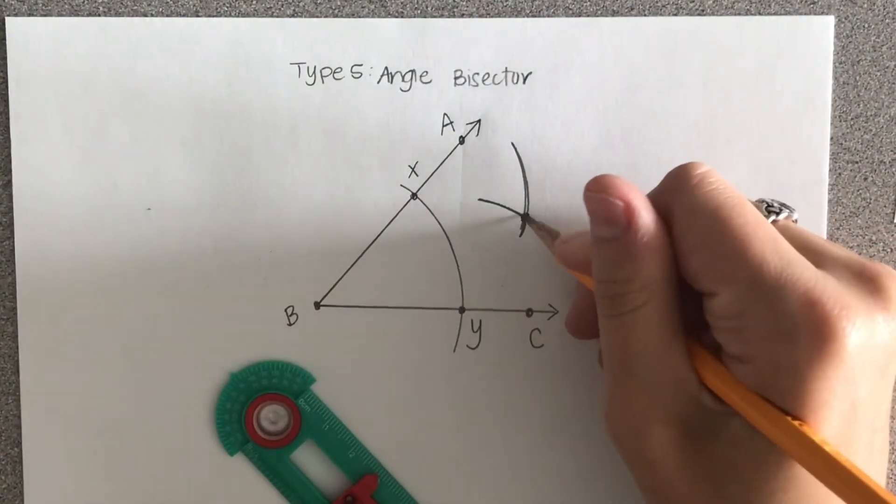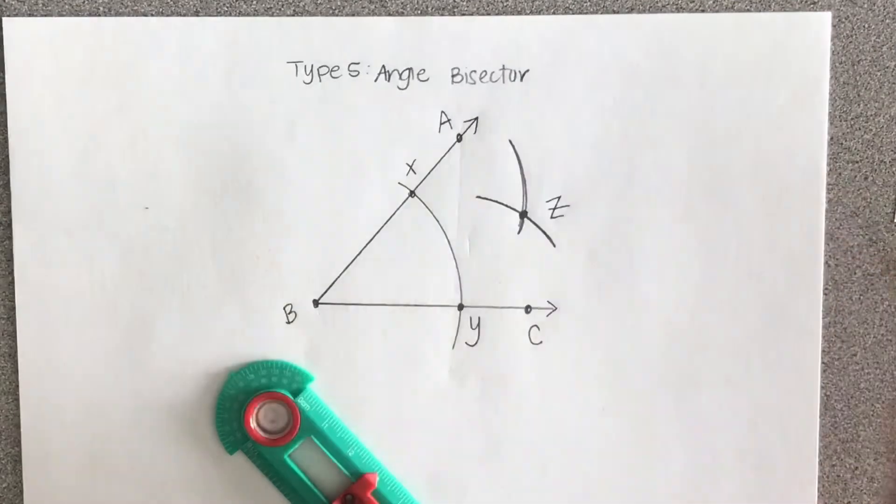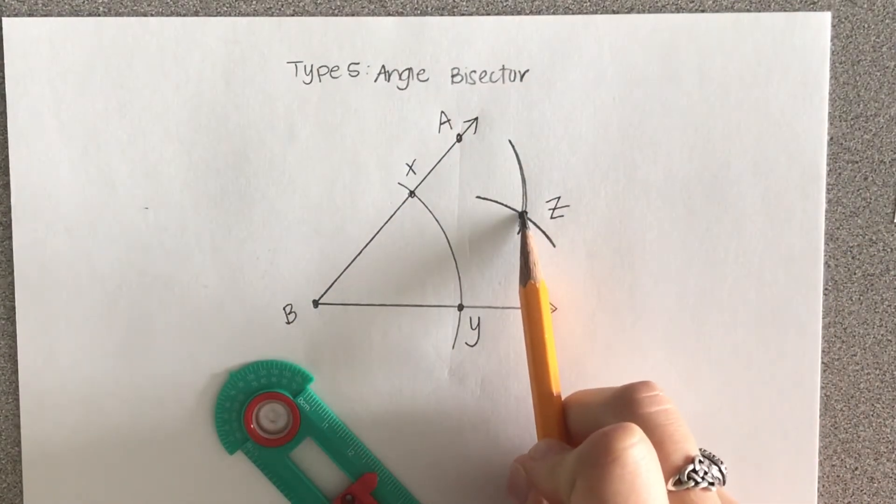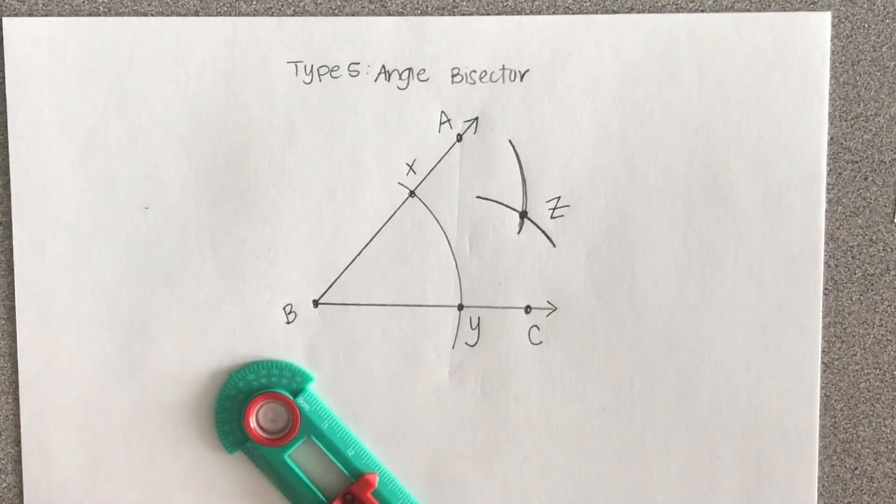This point where they meet I'm going to call point Z. This is now going to be the point where your bisector goes through.